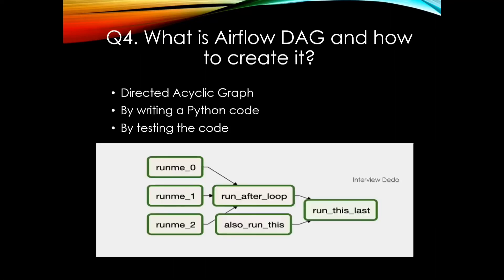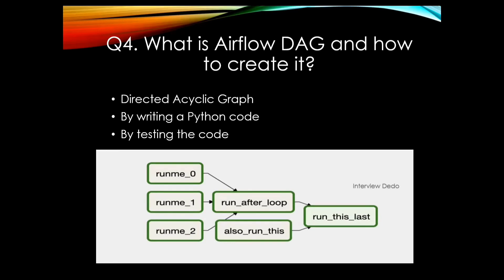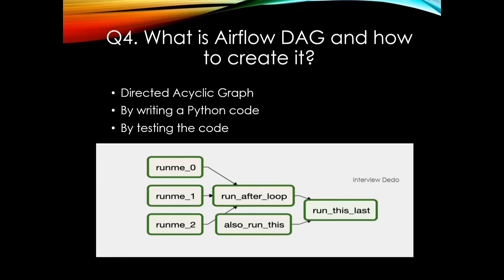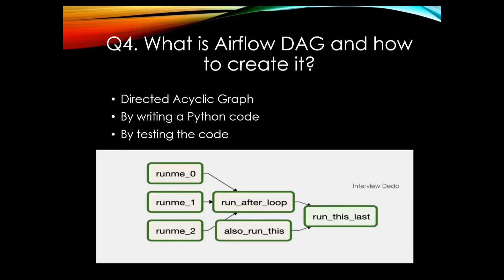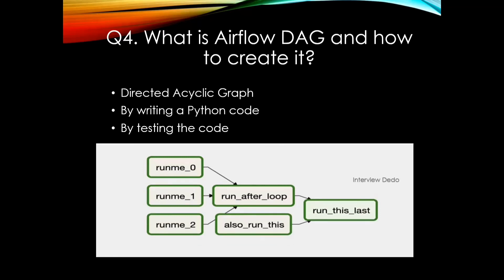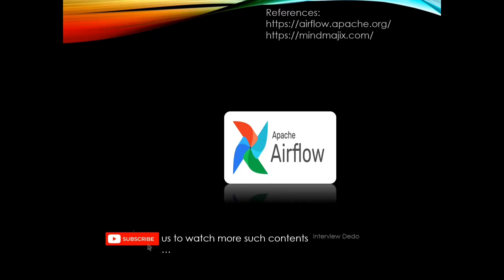The next question is: what is an Airflow DAG and how do you create it? A DAG, which stands for Directed Acyclic Graph, makes a collection of all the tasks you want to run, organized in a way that reflects the dependencies and relationships of those tasks. A DAG is defined as a Python script which represents the DAG structure, tasks, and their dependencies as code. Airflow is used for scheduling and orchestration of data pipelines — meaning sequencing, coordination, scheduling, and maintaining complex data pipelines from diverse sources. You can create a DAG by writing Python code or testing the code. Please subscribe and comment below if you need more questions related to Apache Airflow or any other service.